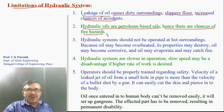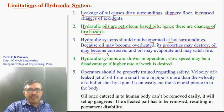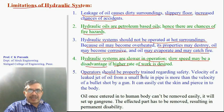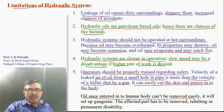If the temperature of the oil increases beyond a certain limit, the oil may vaporize and catch fire. Therefore, hydraulic systems should not be operated in hot surroundings, because oil may get overheated, its properties will be destroyed, it will become corrosive, and it may catch fire. Due to the viscosity of oil, hydraulic systems are slower in operation, which may be a disadvantage if higher speed is desired. Operators must be given proper training regarding safety, because an oil jet from a small hole in a pipe can have velocity higher than a bullet, easily cut skin and pierce into the body. Oil that enters the human body cannot be removed easily and may cause gangrene, resulting in permanent disability.